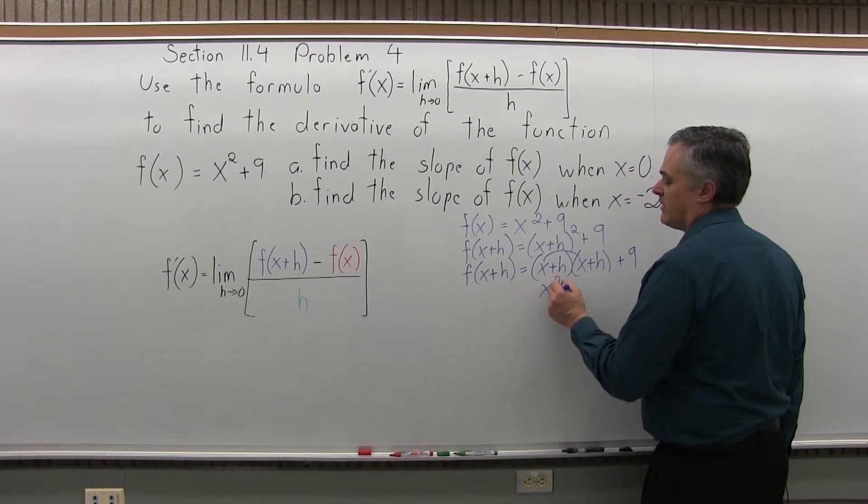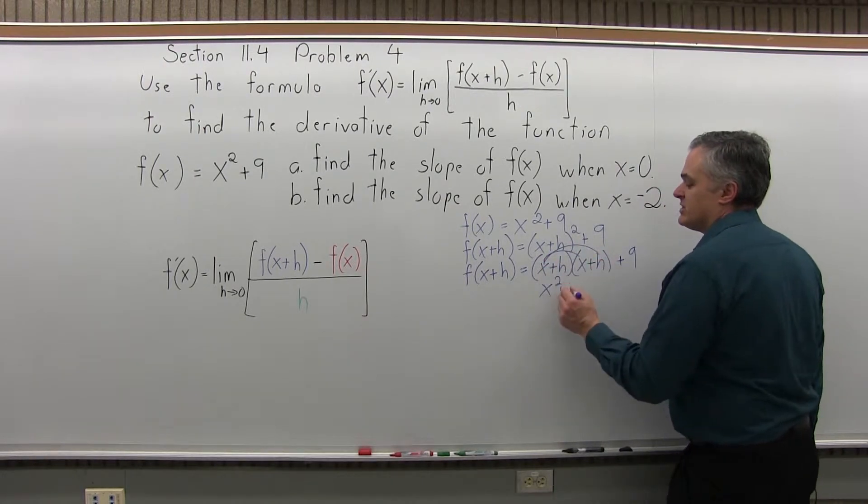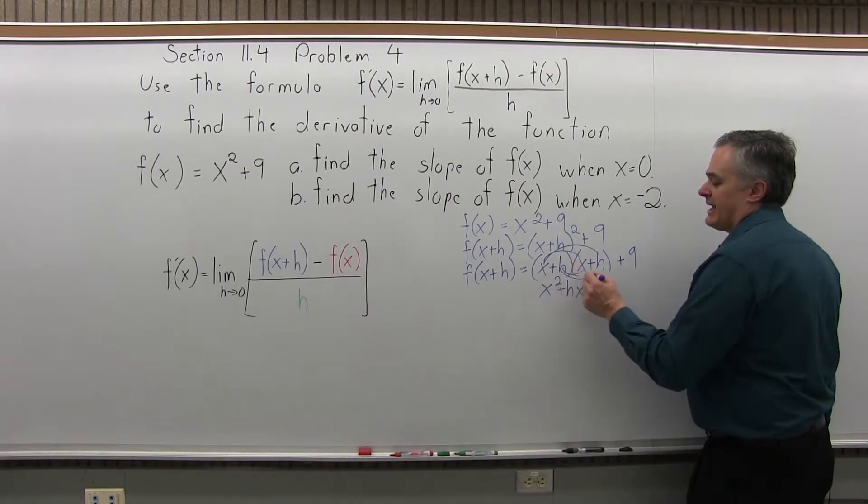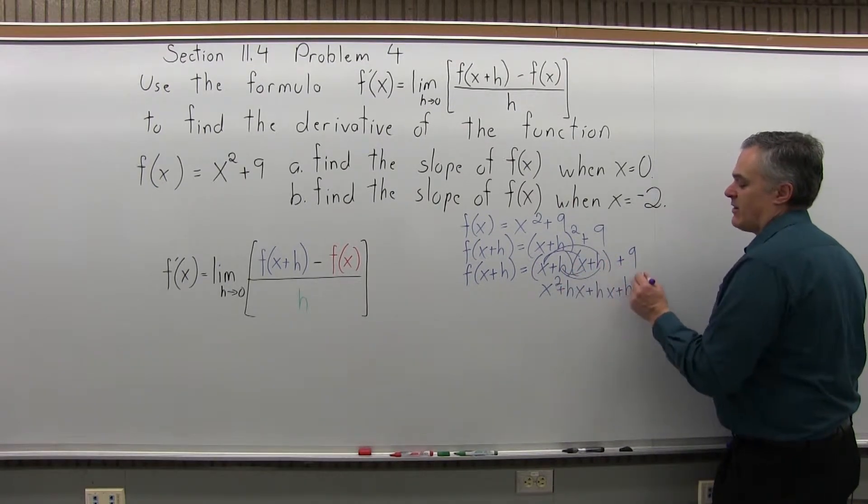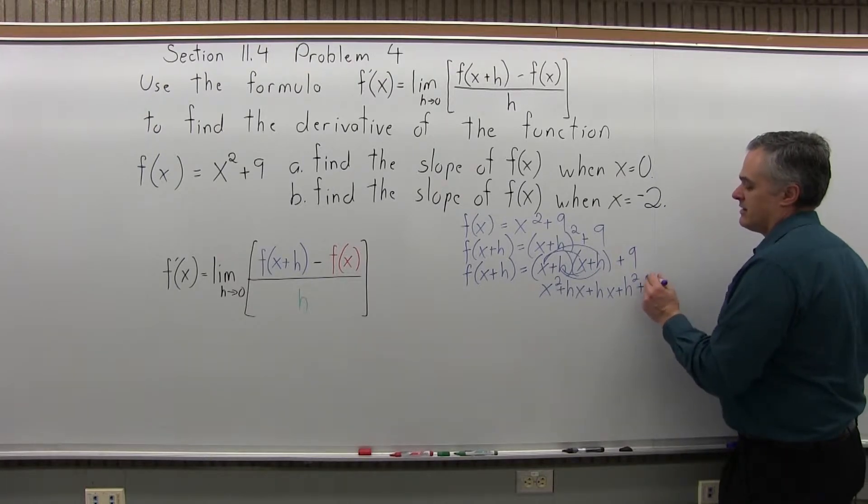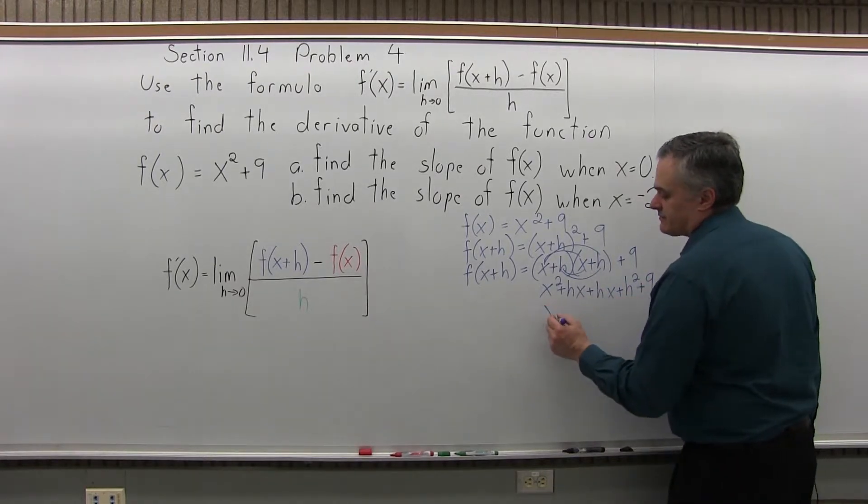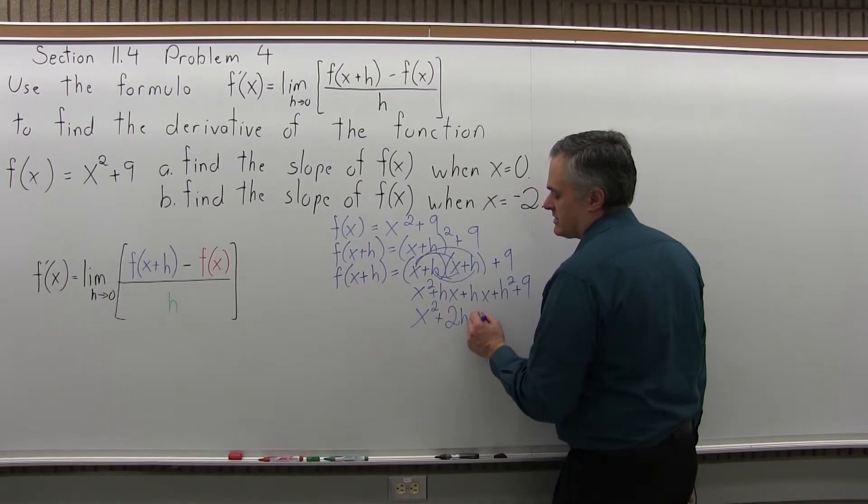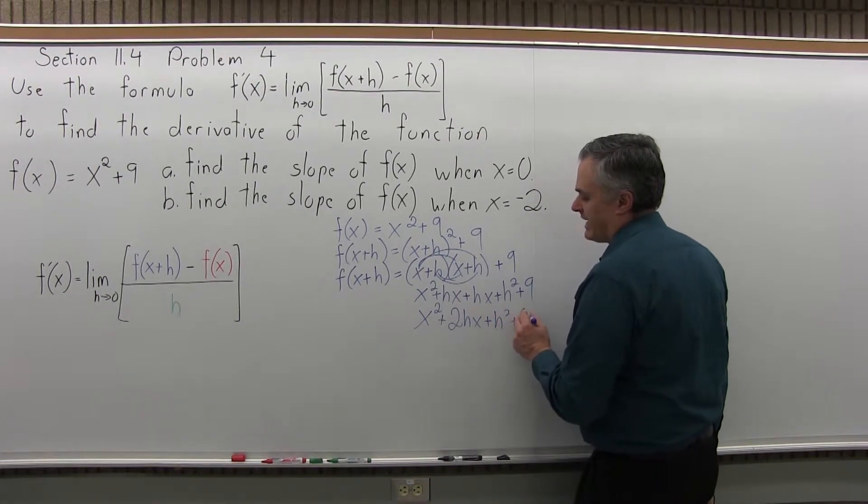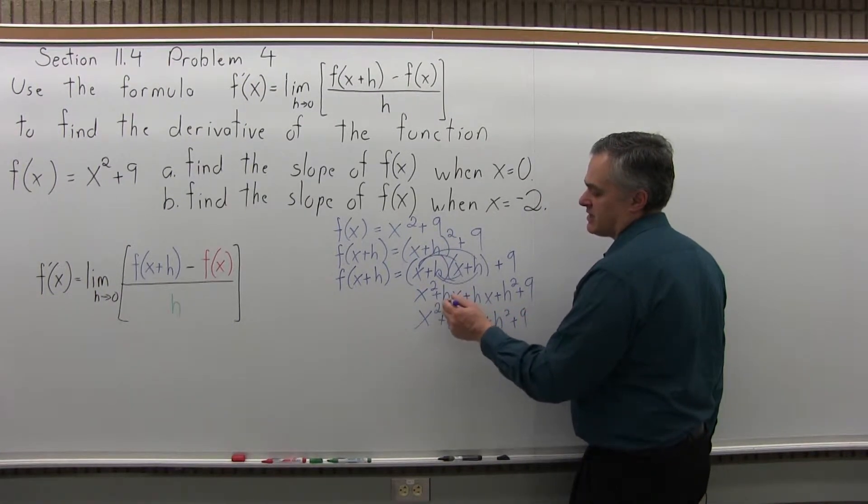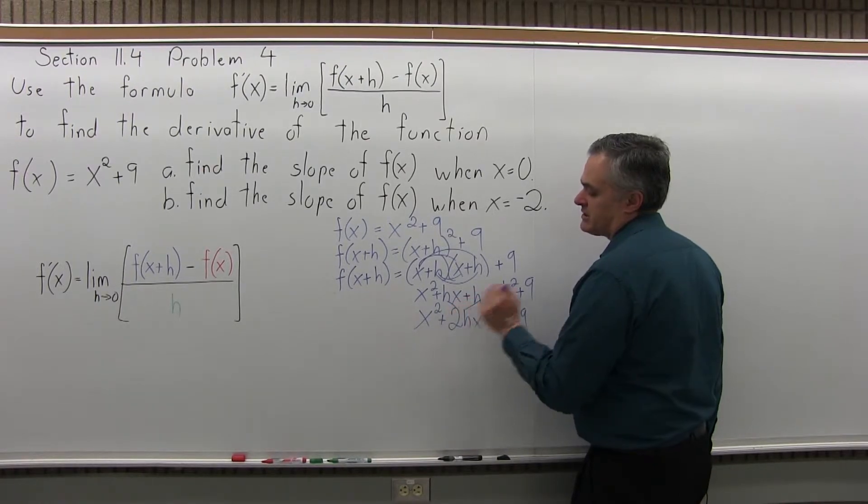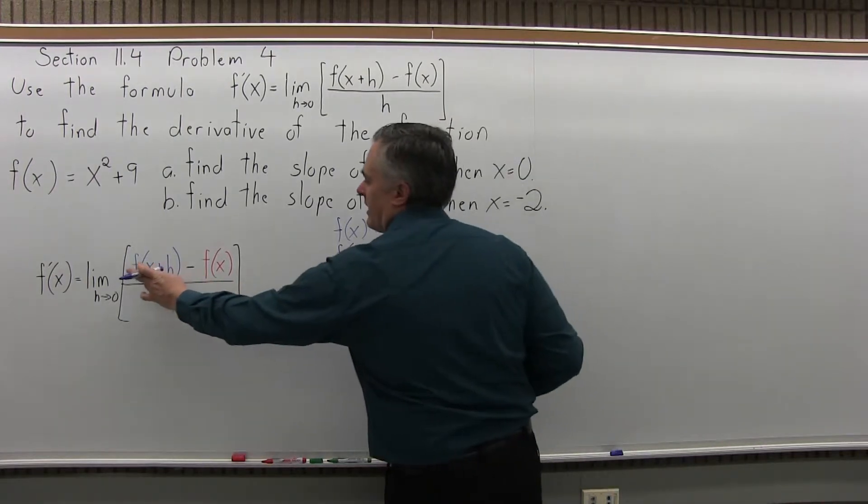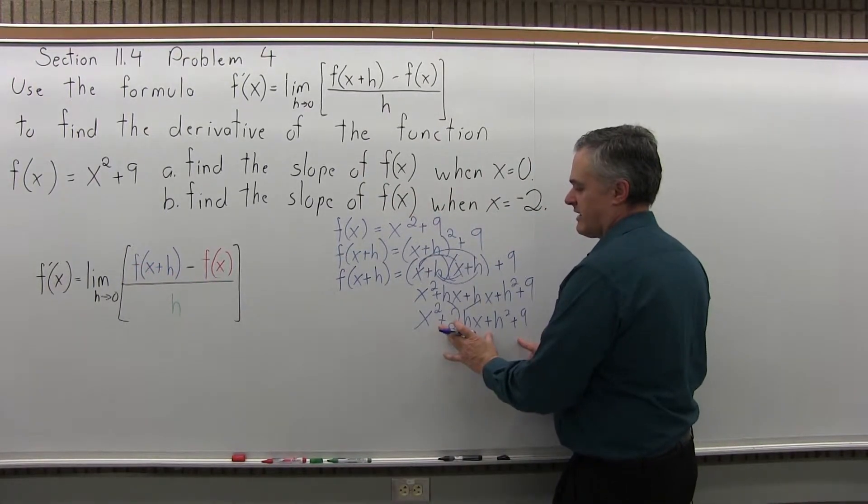x times x is x², x times h is hx, then this h times x is another hx, then h times h is h², and there's a 9 on the end. I have x² + 2hx + h² + 9. What I did is I combined the hx that's showing up in two spots into 2hx. So for the blue part of my difference quotient, this is f(x+h).